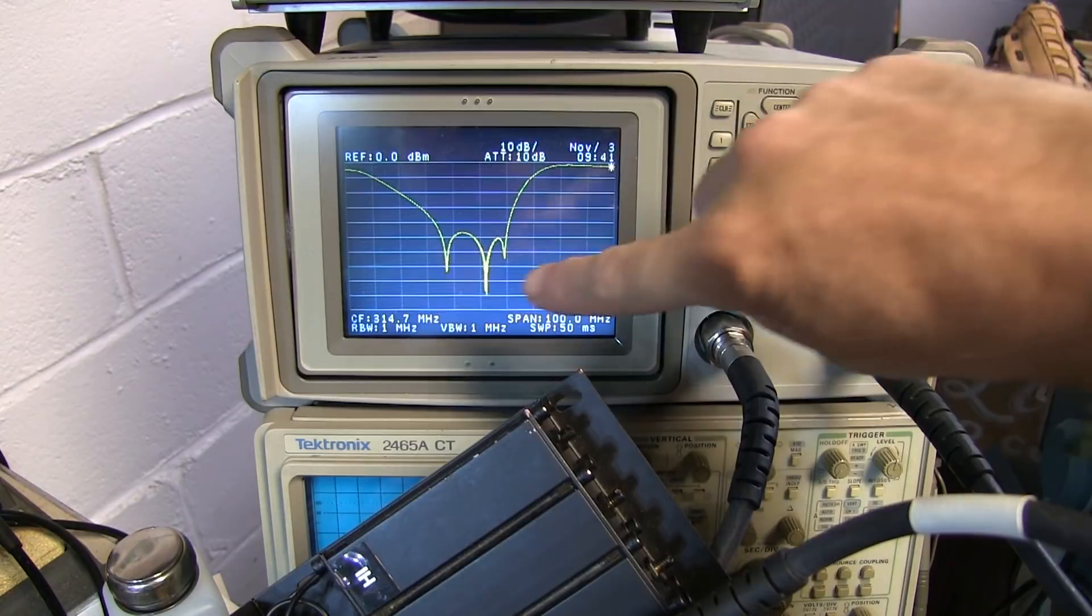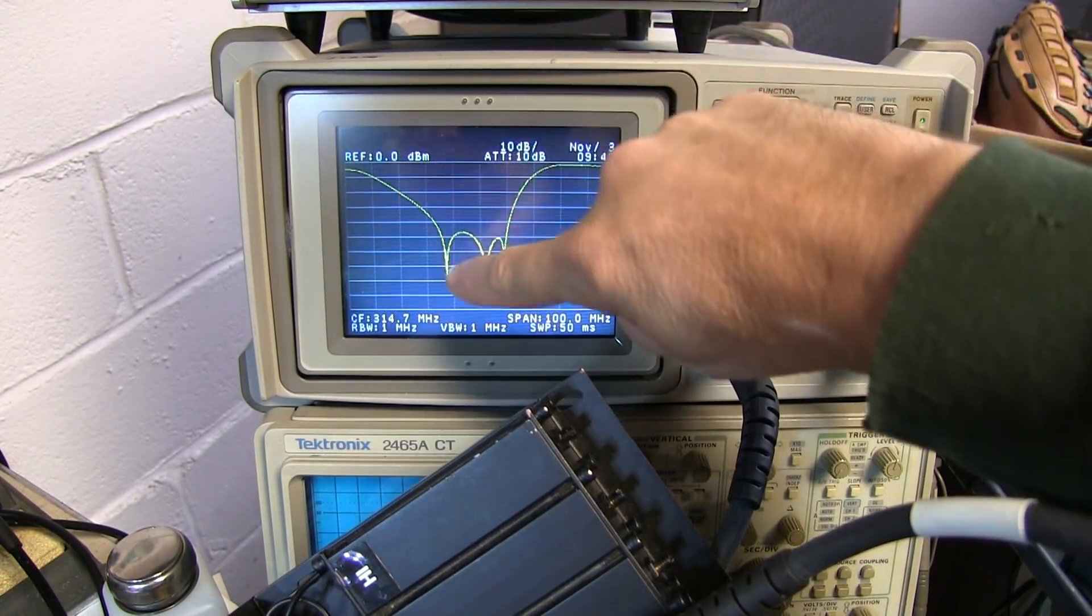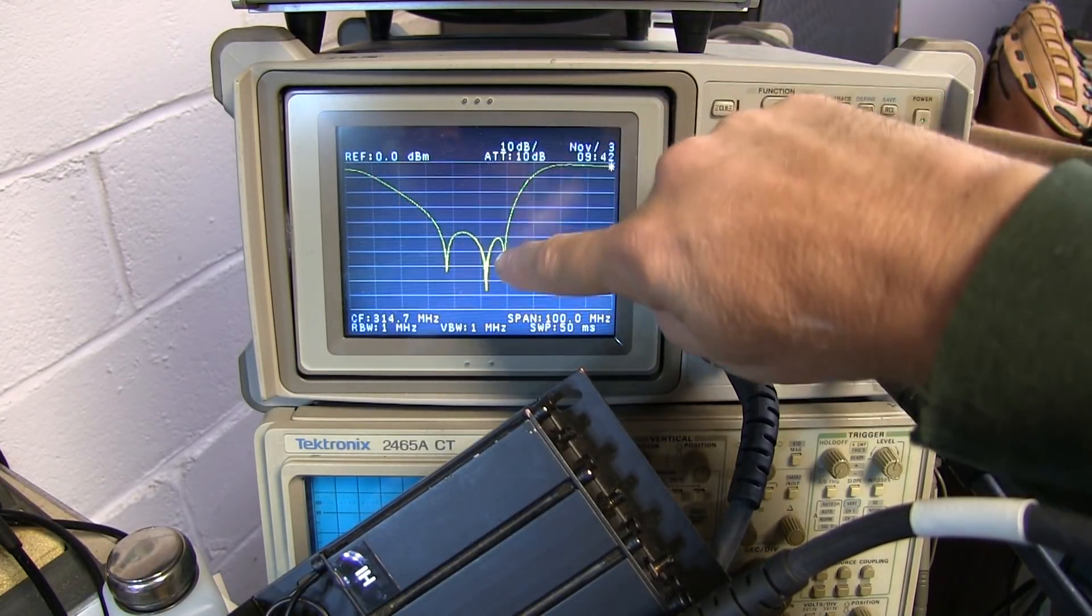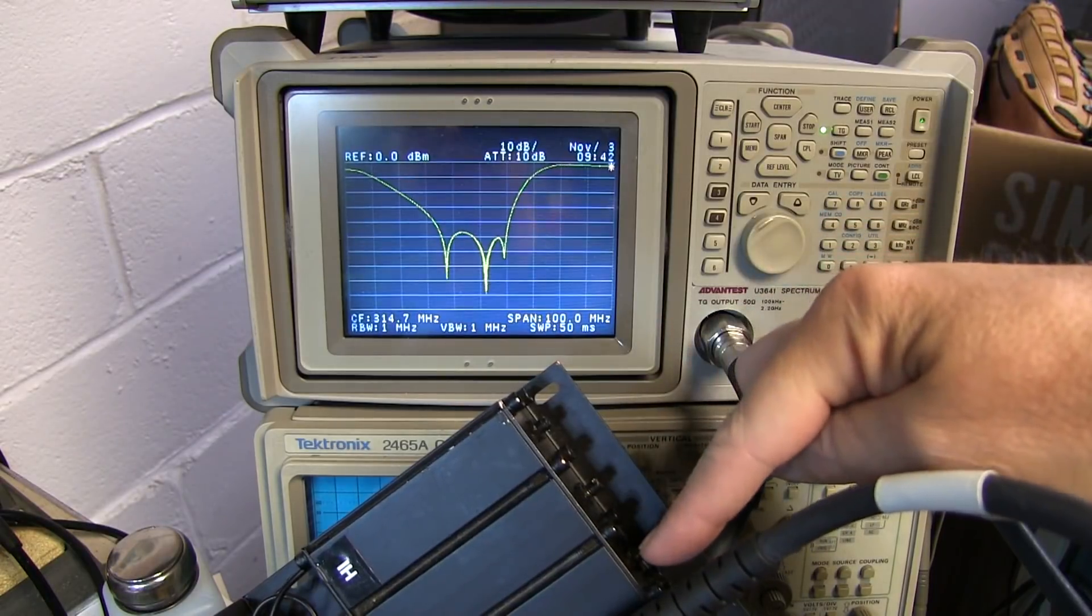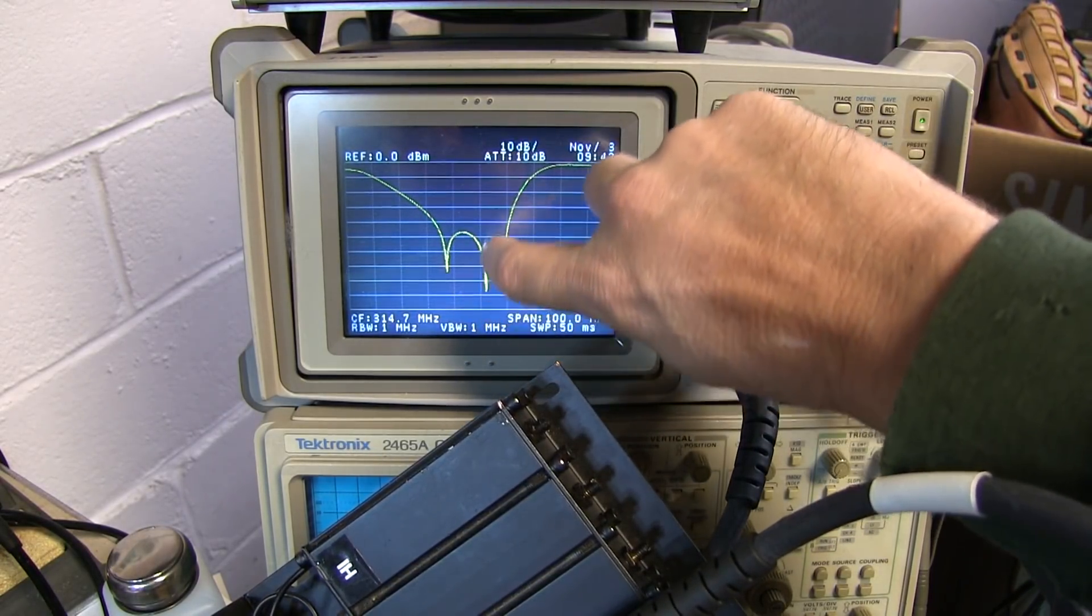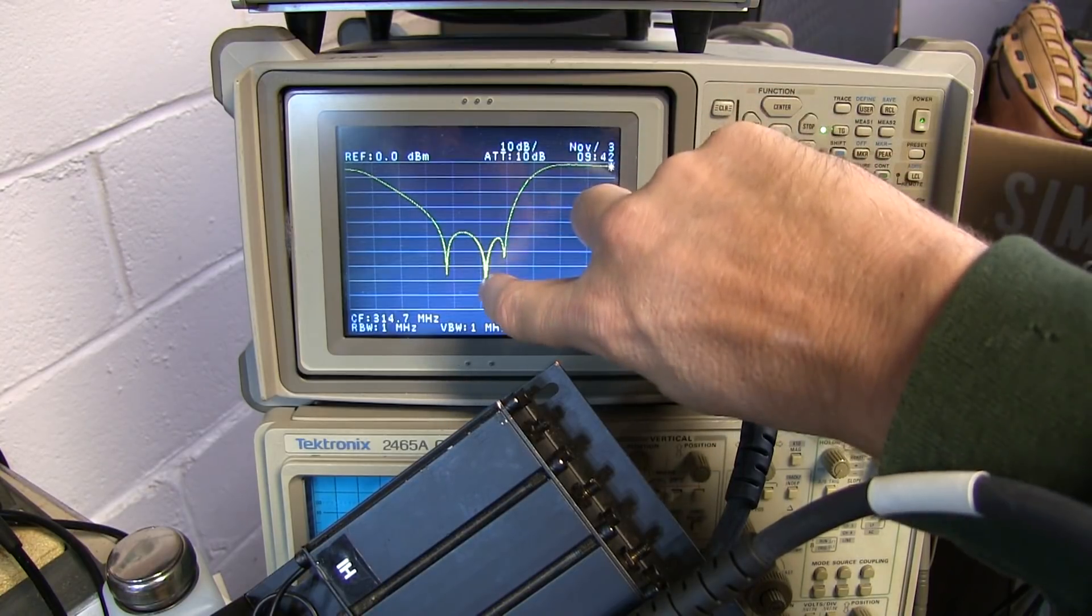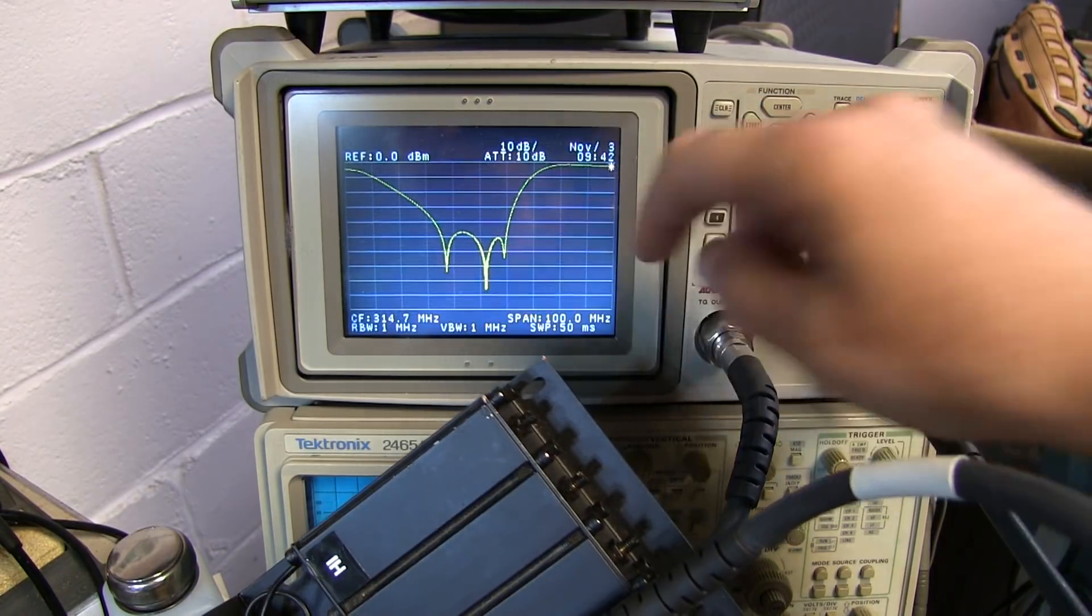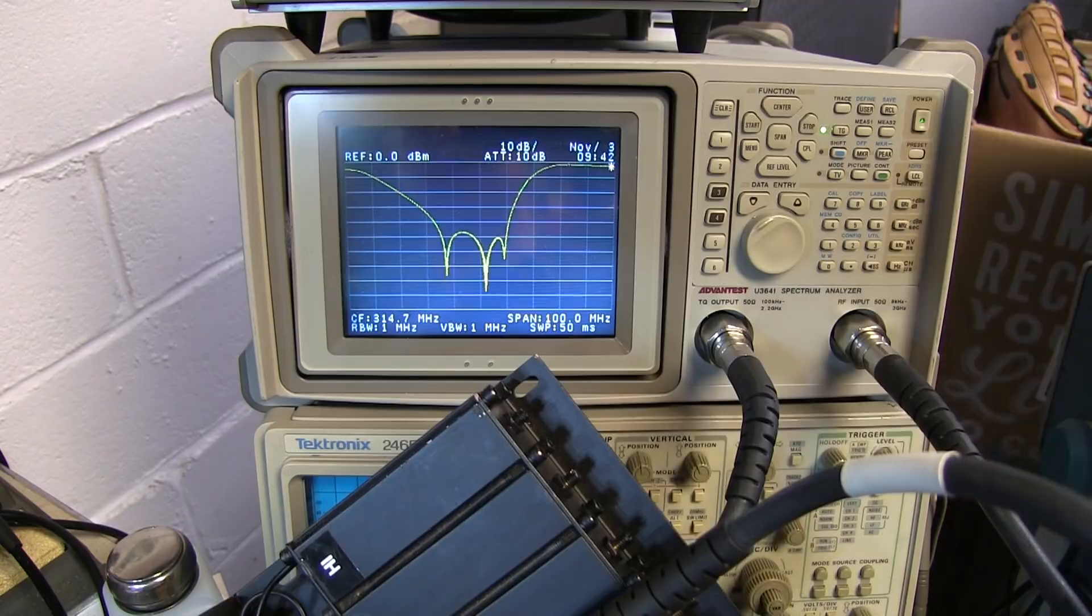What we can see on the analyzer is essentially the notch. In this case there's three little notches because of the three cavities that are not properly tuned. Right here at the center is where we want all these things to line up. So we'll just adjust each of these screws to make that happen.